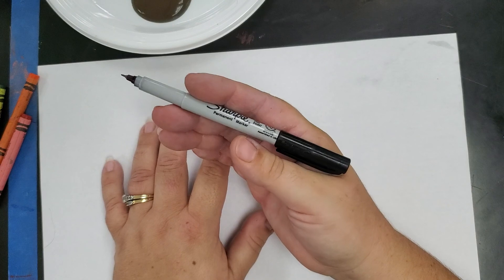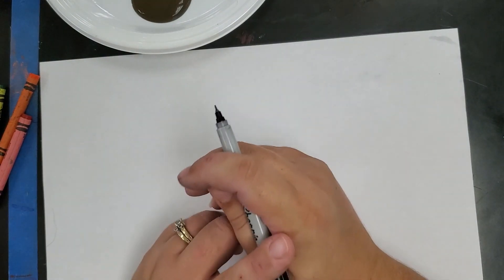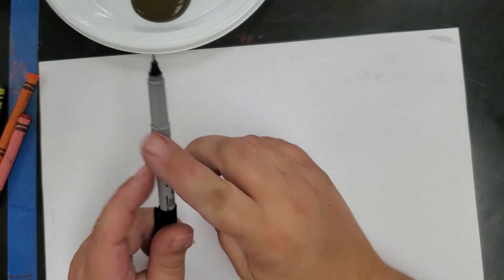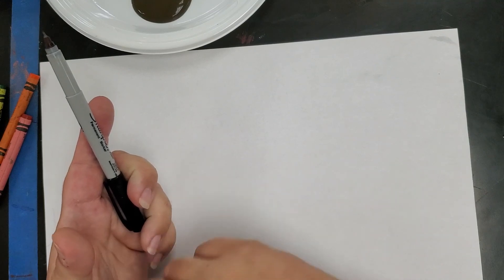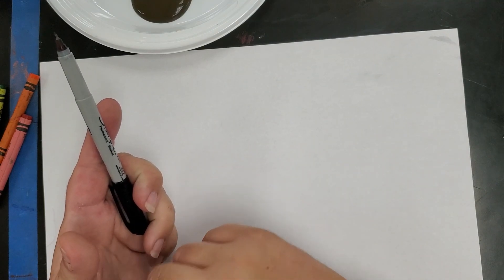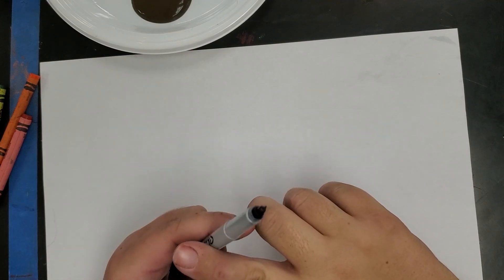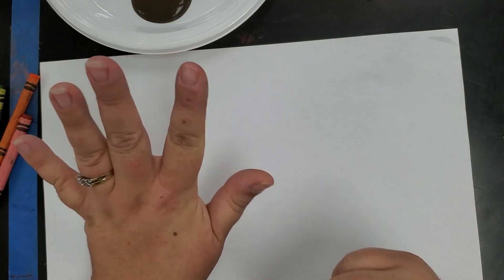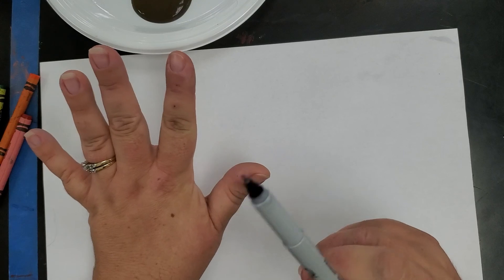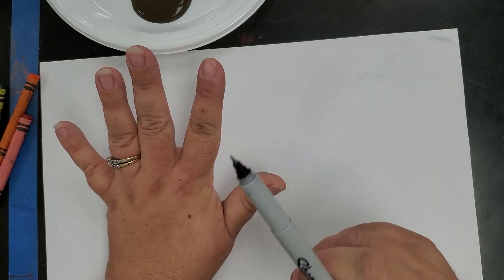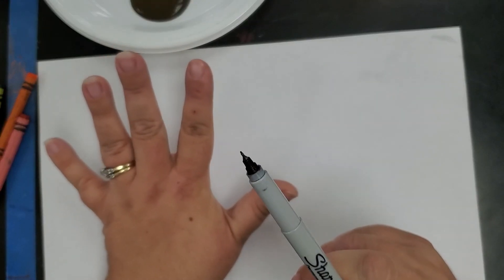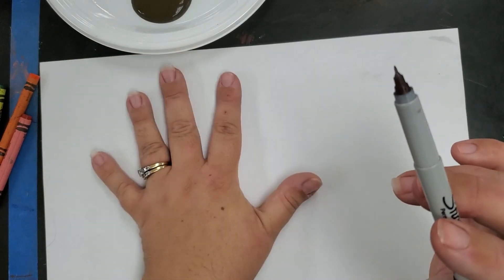Then we're going to do one where we're going to cut it out and glue it, and the last one we're going to paint it. So we're going to start with the coloring one. I have one sheet of paper in front of you, it could be any color. I chose white so the colors stand out a little bit better. You want to make sure you have your pen, it could be a pencil, a pen, or a marker.